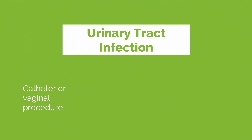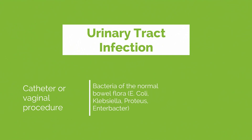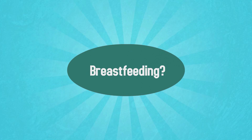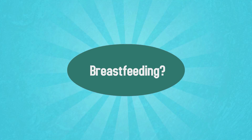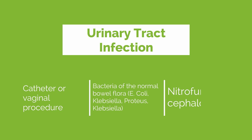Women who have had a Foley catheter or a vaginal procedure are at increased risk of developing a urinary tract infection — so that's pretty much any postpartum patient. Bacteria of the normal bowel flora are the most common pathogens, including E. coli, Klebsiella, Proteus, and Enterobacter. Don't forget to ask if she is breastfeeding, as this will influence which antibiotic you choose. The most common antibiotics for treating a UTI in the postpartum period are nitrofurantoin or a cephalosporin.